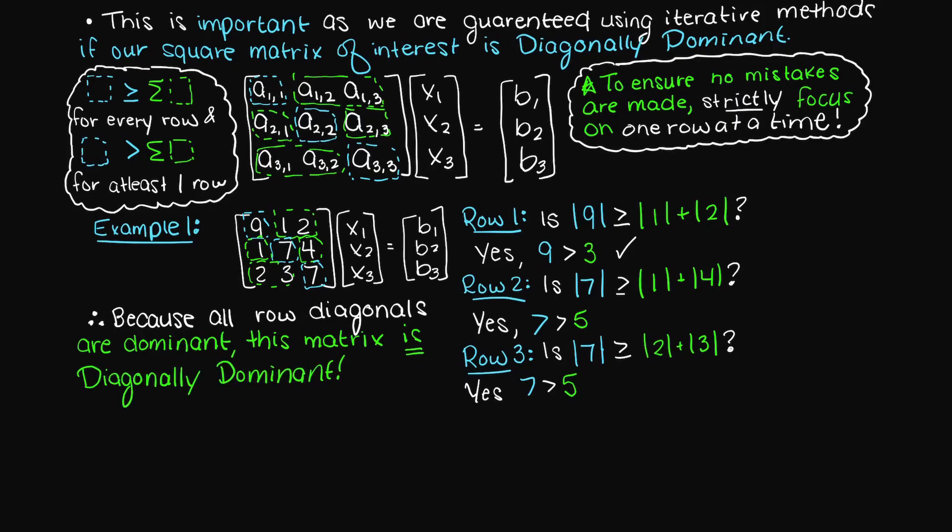This means that if we applied an iterative method to this matrix we would be guaranteed convergence which means we would get a unique solution.